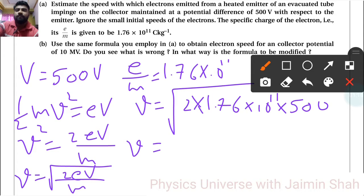V is equal to we will get 2 into 1.76 into 500. So, see by 10 only. That is 176. So, under root 176 into 10 raised to 10.